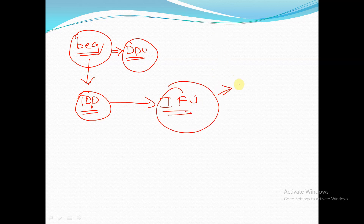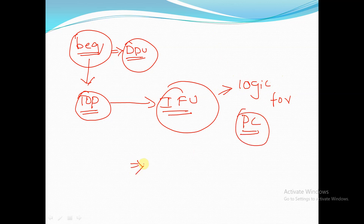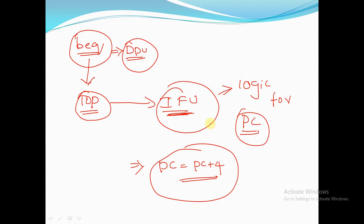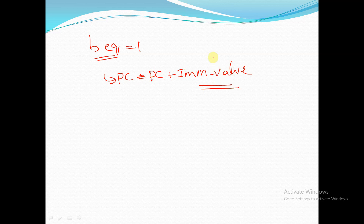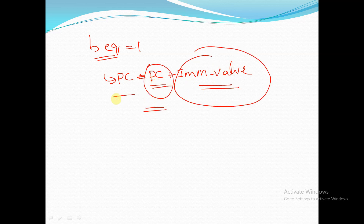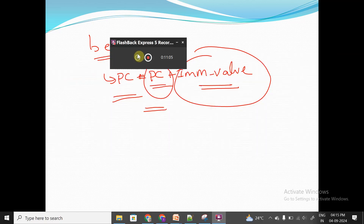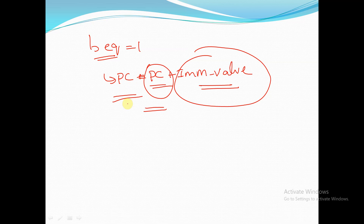The top module gives the BEQ signal to the instruction fetch unit, which contains the logic for the program counter (PC). In normal conditions, the instruction fetch unit increments PC by 4 and fetches the next instruction. But if BEQ is equal to 1, the program counter is set to PC = PC + immediate value from the instruction, incrementing by the immediate offset provided in the instruction.